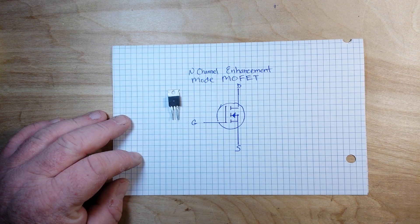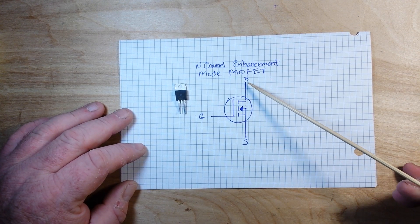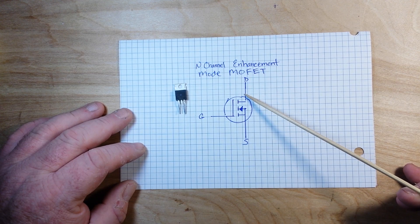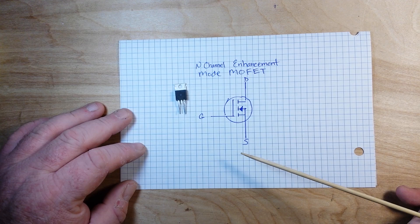If you're unfamiliar, here is the symbol. This is the drain, the source, and the gate.